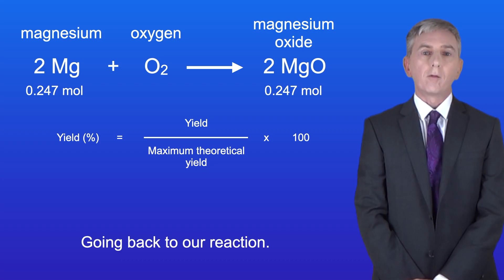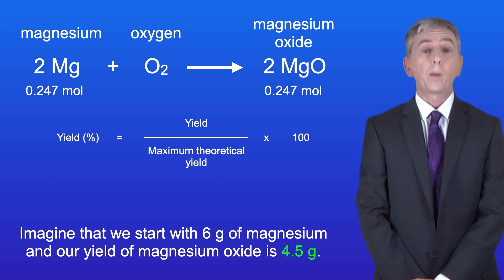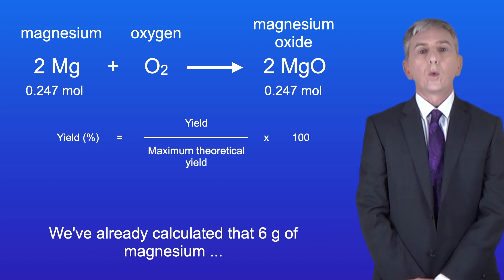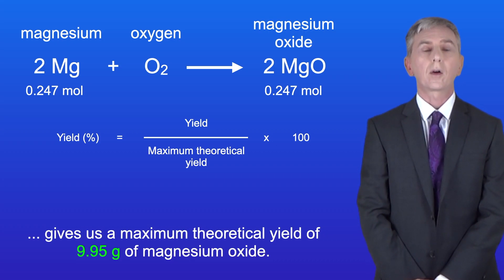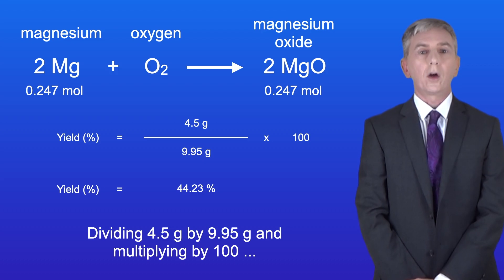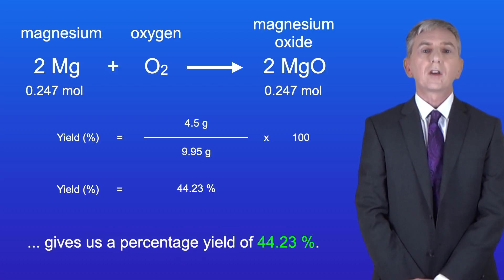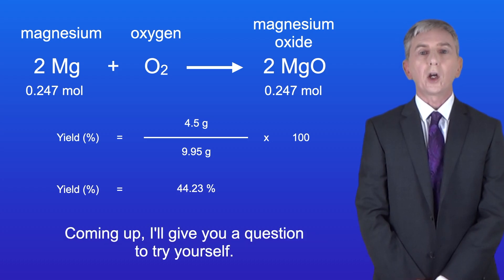Going back to our reaction, imagine that we start with 6 grams of magnesium and our yield of magnesium oxide is 4.5 grams. We've already calculated that 6 grams of magnesium gives us a maximum theoretical yield of 9.95 grams of magnesium oxide. Dividing 4.5 grams by 9.95 grams and multiplying by 100 gives us a percentage yield of 44.23%.